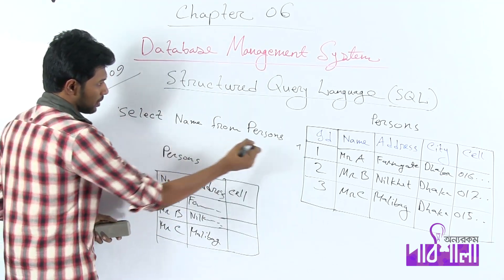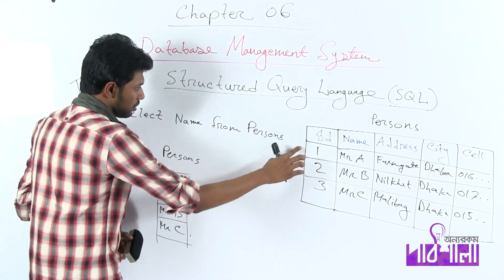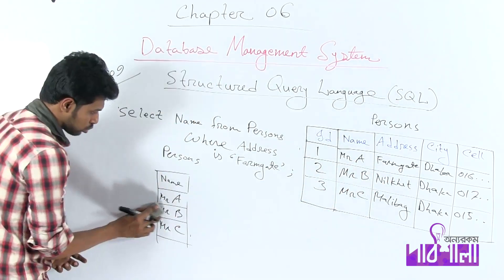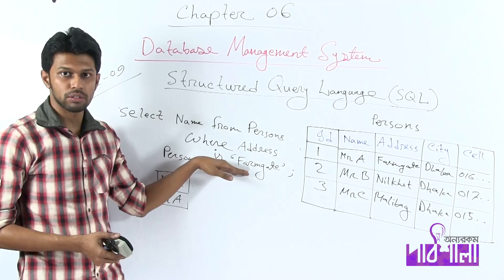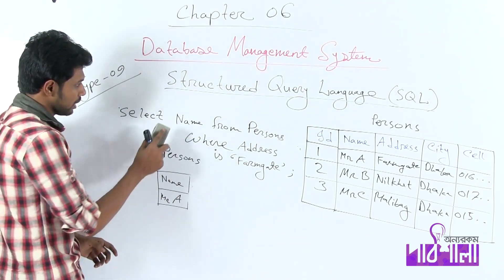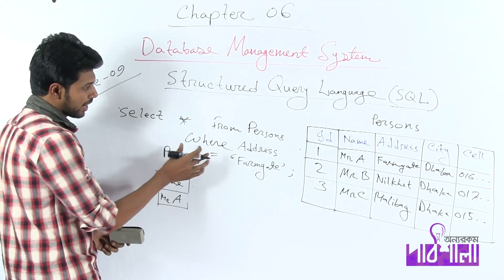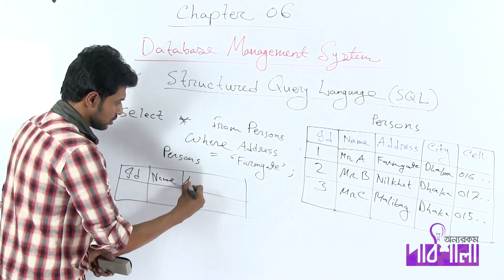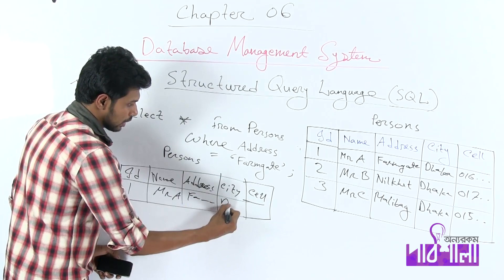SELECT name FROM persons WHERE address = 'Farmgate'. So if you are familiar with Farmgate, you will find the matching information. SELECT name FROM persons WHERE address equals Farmgate — do not forget the equals sign. The result shows: ID 1, name Mr. A, address Farmgate, city, cell number 1016.